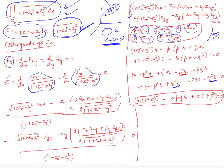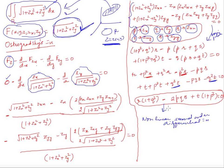After manipulation, you get: r(1 + q²) - 2pqs + t(1 + p²) = 0. This is a nonlinear second-order differential equation, and it is difficult to solve. However, we would like to understand physically what this differential equation represents.